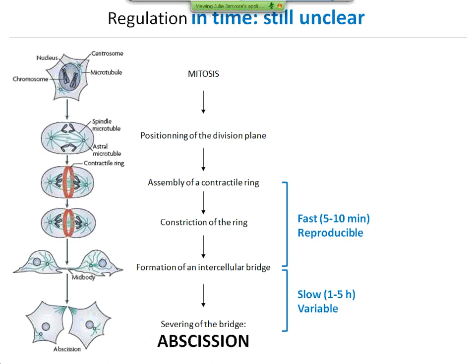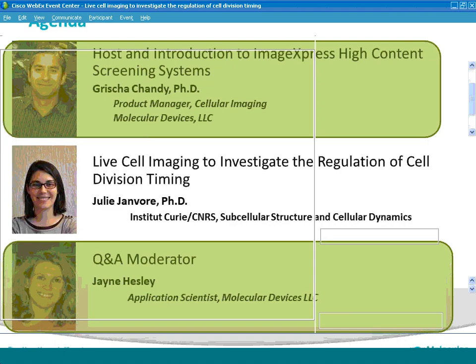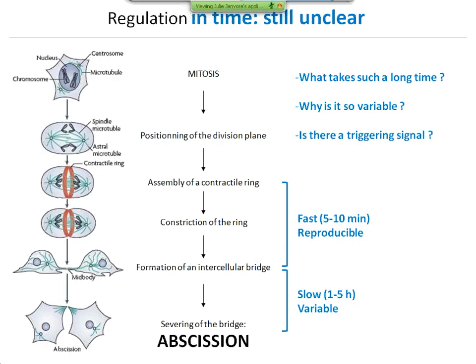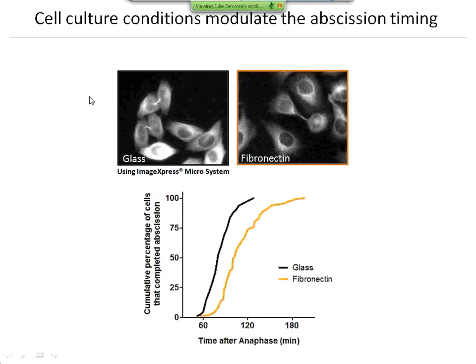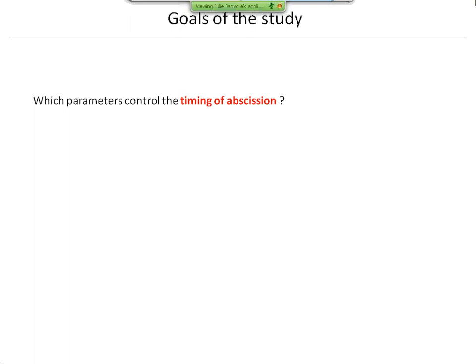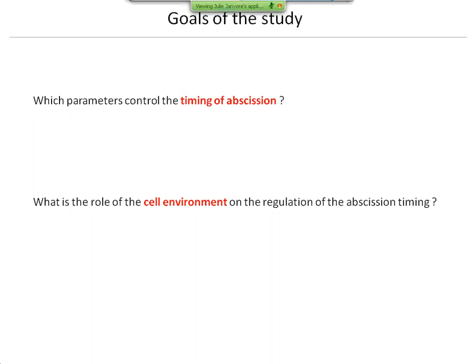We still have a lot of questions: why does it take such a long time, why is it so variable, and is there a regulatory mechanism? We observed quite a long time ago that in the same cell line, just by modifying the way we coat the surface — either bare glass or fibronectin-coated glass — this was enough to change the abscission timing. So we got interested in understanding the parameters that could control the timing of abscission, and in particular I was interested to study the role of the cell environment on this regulation.